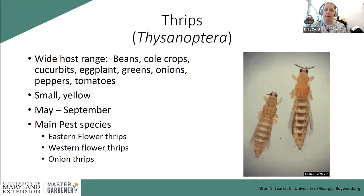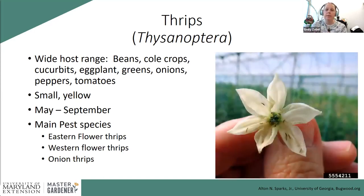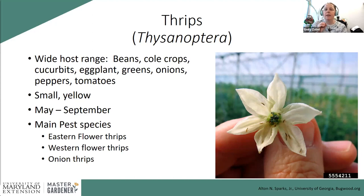Thrips tend to be small with a yellow-brown coloration, generally seen May through September with warmer weather, sometimes continuing into November. Common species here are the eastern and western flower thrip, and the onion thrip, which is specific to allium crops like onions and garlic. There are also predatory thrips, so if you find what you think are thrips, flip over the leaf, sit, and watch — predatory insects tend to move actively, like they're hunting.